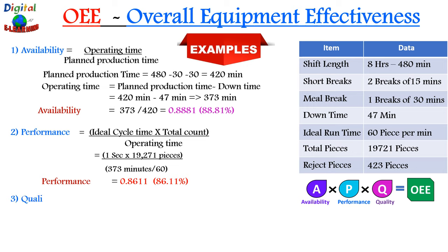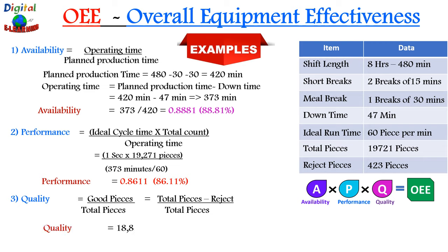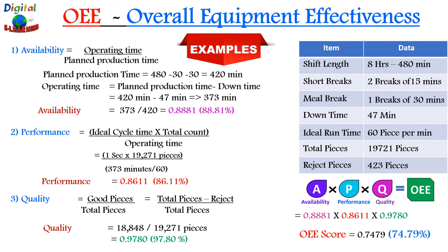Now we calculate the third OEE factor: quality. The quality formula is good pieces divided by total pieces. Good pieces equals total pieces minus rejections: 19,271 minus 423 equals 18,848. So quality is 18,848 divided by 19,271, giving a quality score of 97.8%. Putting all three together — availability 88.81%, performance 86.11%, quality 97.8% — we get an OEE score of 74.79%.